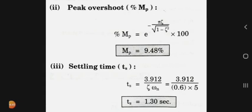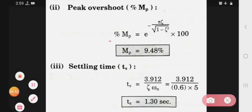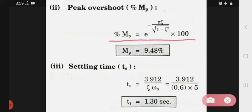Now the next is peak overshoot, percent of Mp. Peak overshoot, you already have the formula that is percent Mp = e^(-πζ/√(1-ζ²)) × 100. Now we will put the eta value, we get 0.6, and this is the result of e to the power.